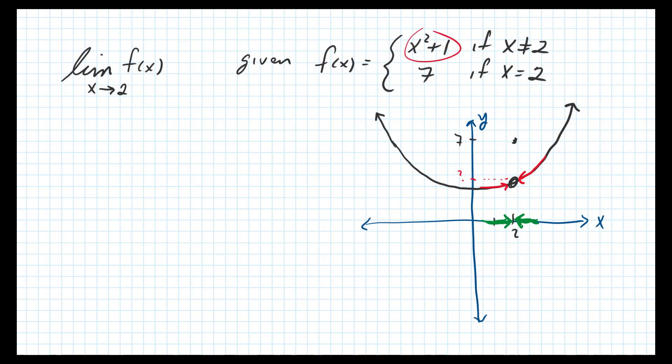And so to do this, notice since x is not equal to 2, what we're going to do is use x squared plus 1 for the function, because that's where we're tending, right, to 2, it's not equal to 2. So this would be equal to the limit as x approaches 2 of x squared plus 1.